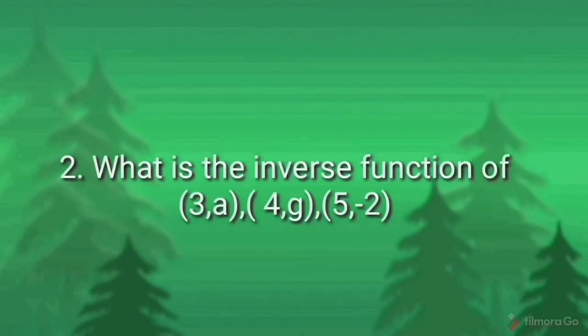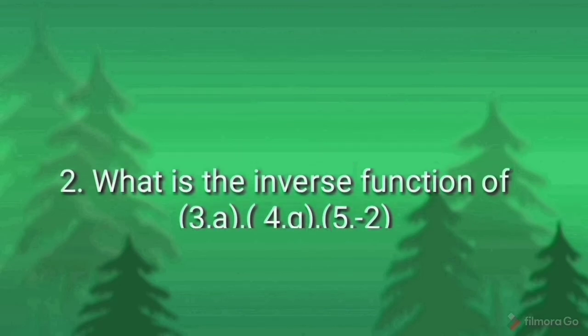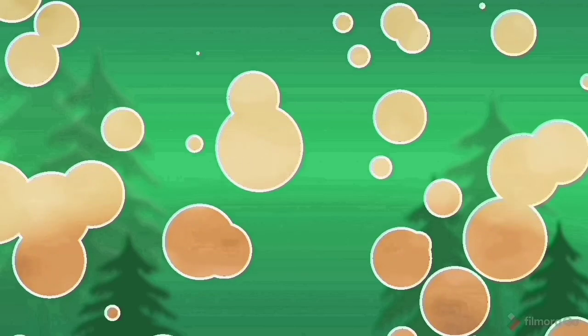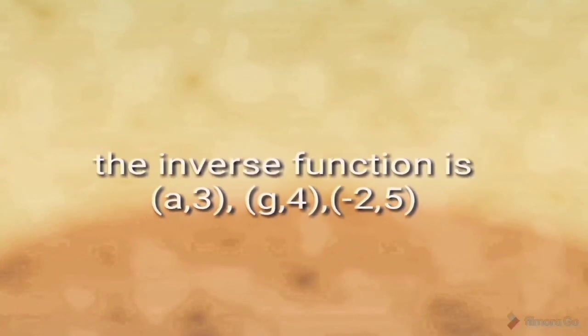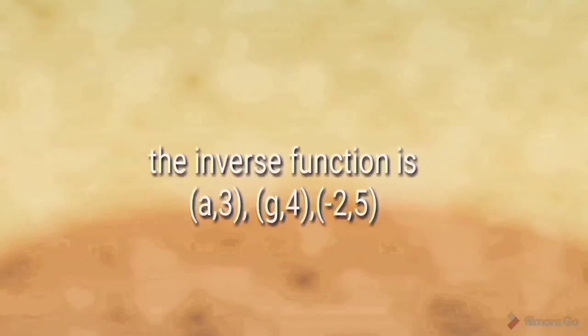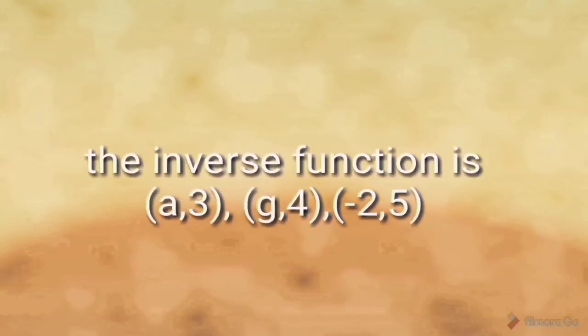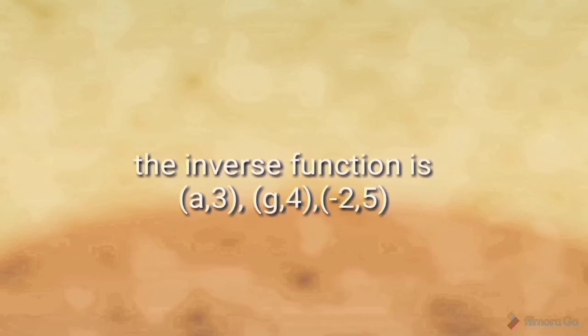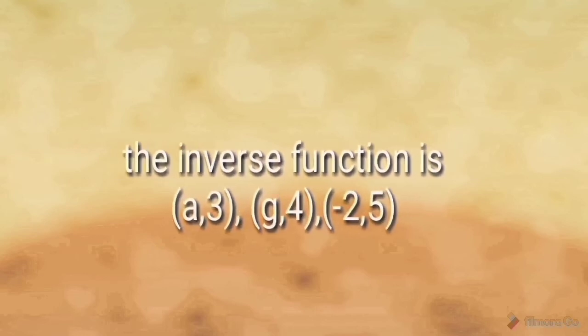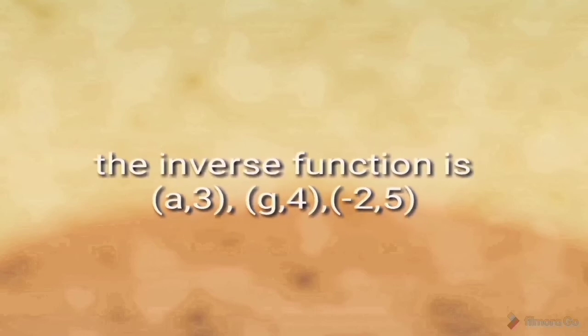What is the inverse function of the ordered pairs (3,A), (4,G), (5,-2)? The inverse function is: (A,3), (G,4), (-5, 2).